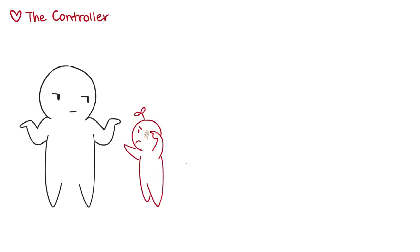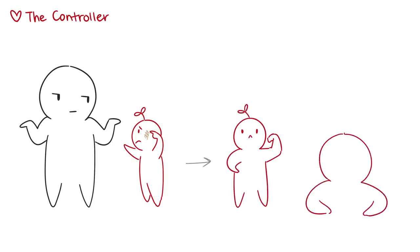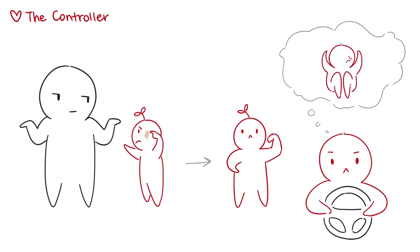3. The controller. The controller usually grows up in a home where there wasn't a lot of protection, so they learn to toughen up and take care of themselves. They need to feel in control at all times to prevent the vulnerability they experienced in their childhood from being exposed in their adulthood. People with this love style believe that they're in control when they can avoid experiencing negative feelings of fear, humiliation, and helplessness.